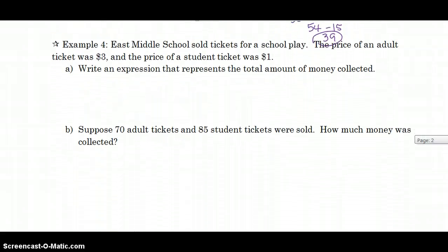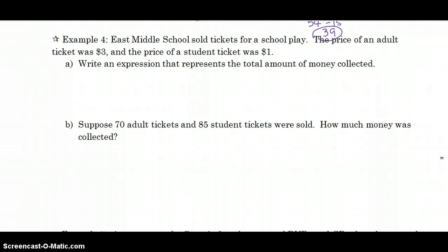Let's look at this example for a word problem together. Don't forget to go back and do A and B, please, on your own. East Middle School sold tickets for a play. The price of an adult ticket is $3. The price of a student ticket is $1.